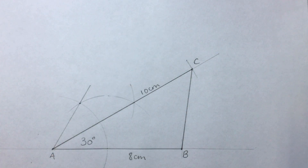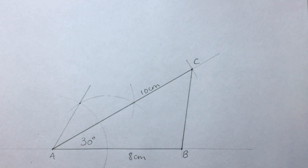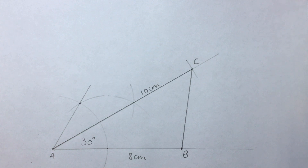So, I have constructed the triangle ABC, where angle BAC is 30 degrees, AB is 8 centimeters, and AC is 10 centimeters.